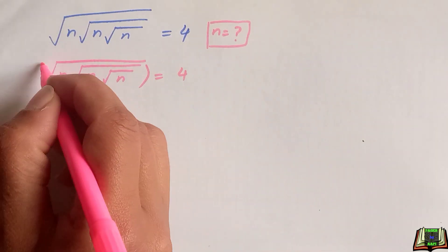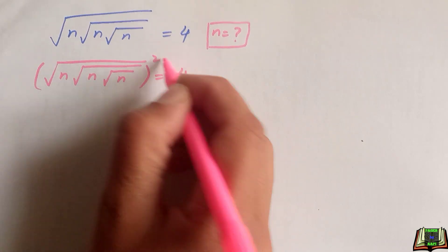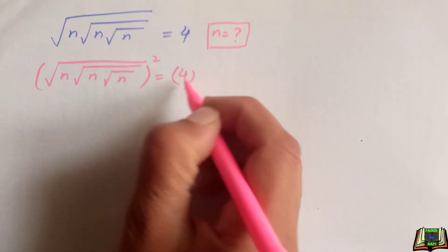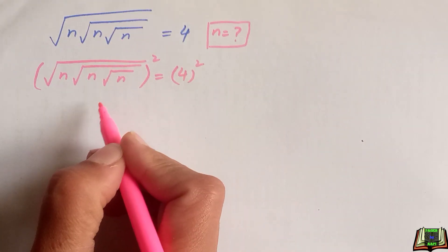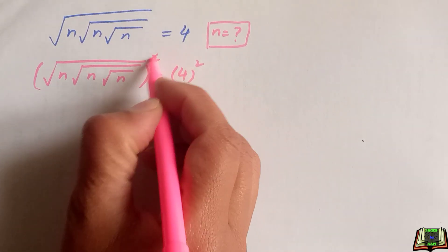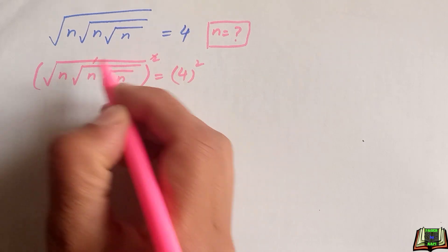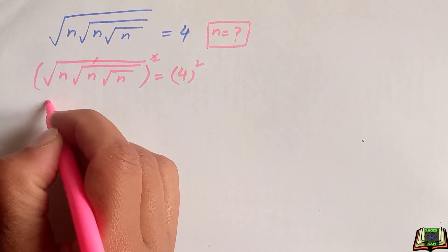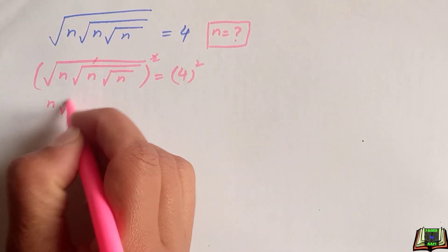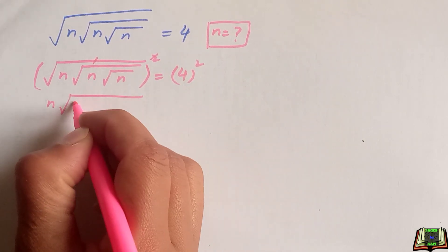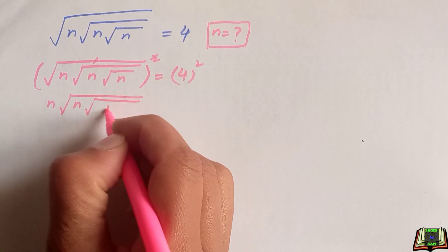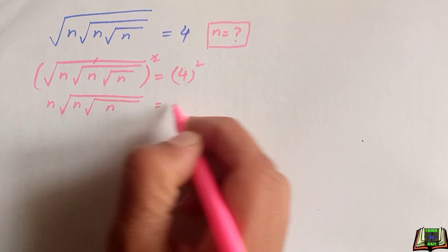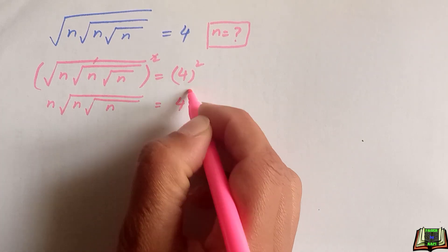We are going to take the square of this equation on both sides, so the square and outermost root will be cancelled out. We are left with n times square root of n times square root of n is equal to 4 squared.